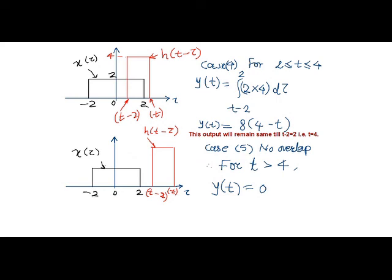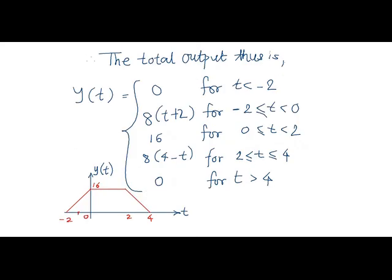Thus the final output of convolution integral is collectively written as y of t as: 0 for t less than minus 2; 8 times t plus 2 from t minus 2 to 0; 16 for 0 to 2; 8 times 4 minus t for value of t from 2 to 4; and finally it is 0 for t greater than 4.